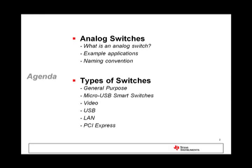Here's a rough agenda of what we will be covering. First, we'll get into analog switches — what is an analog switch, an example of where you can see this in an application, and the TI naming convention. Then we'll go into the different types of switches: a general purpose analog passive switch, a more complex micro-USB smart switch, followed by our specialty switches, which are video, USB, LAN, and PCI Express.